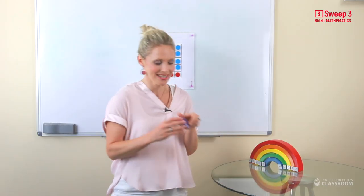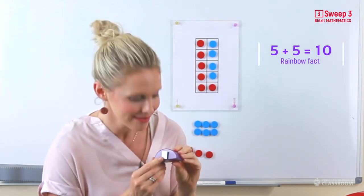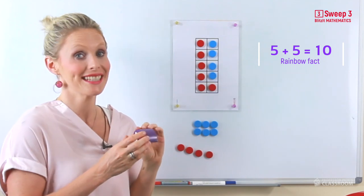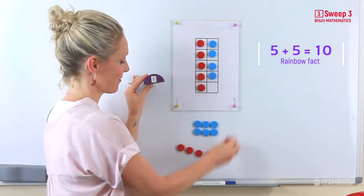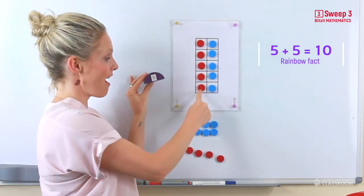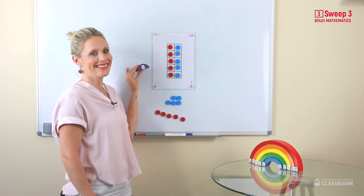Now the last one is 5 and 5. It's easy to see it on the tens frame. 5 and 5 equals 10.